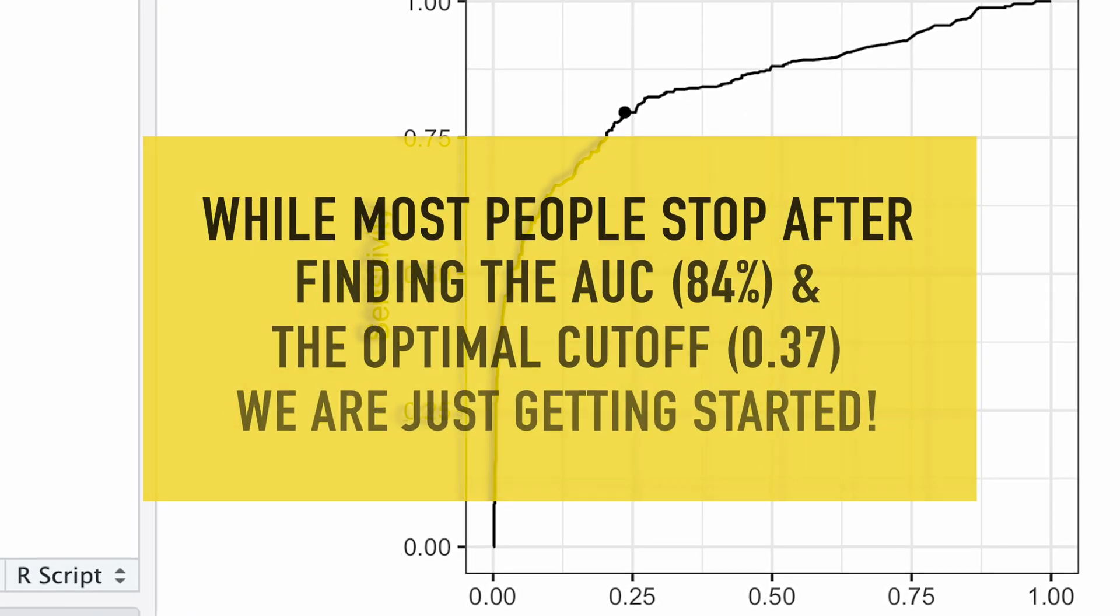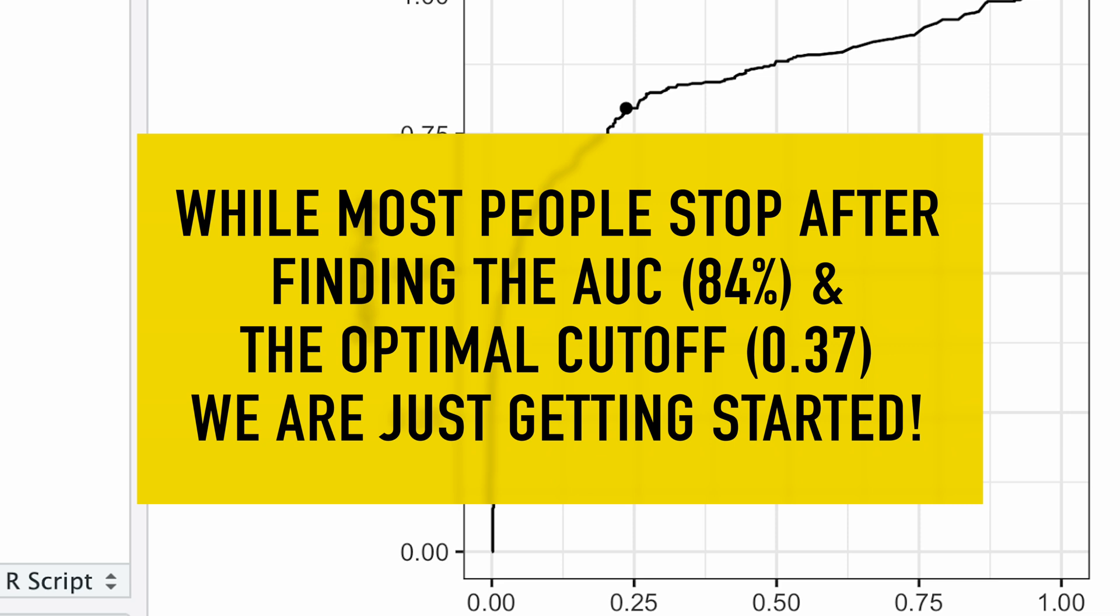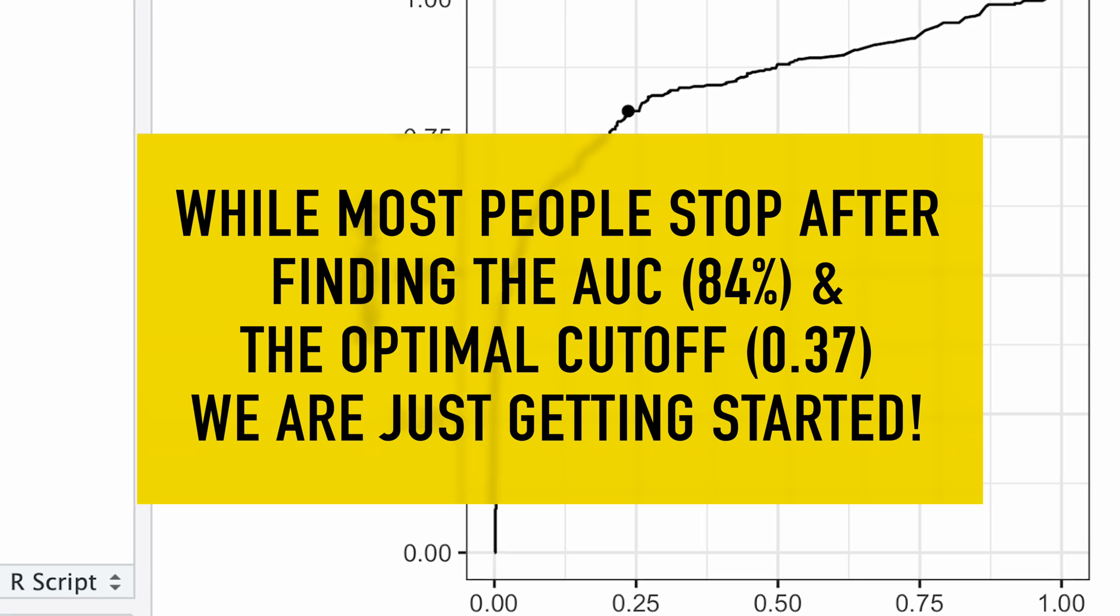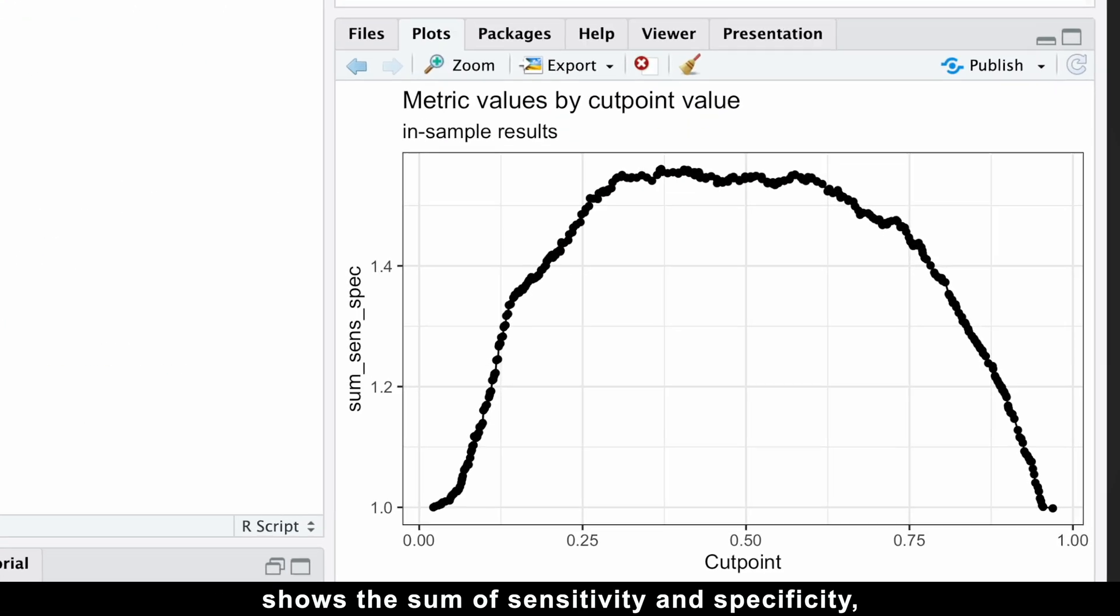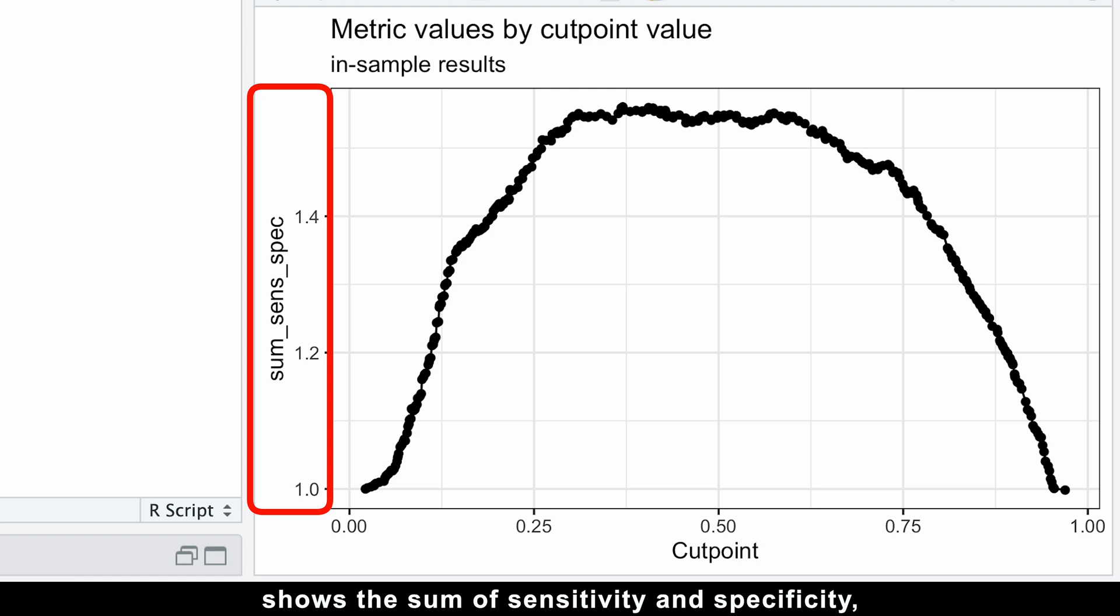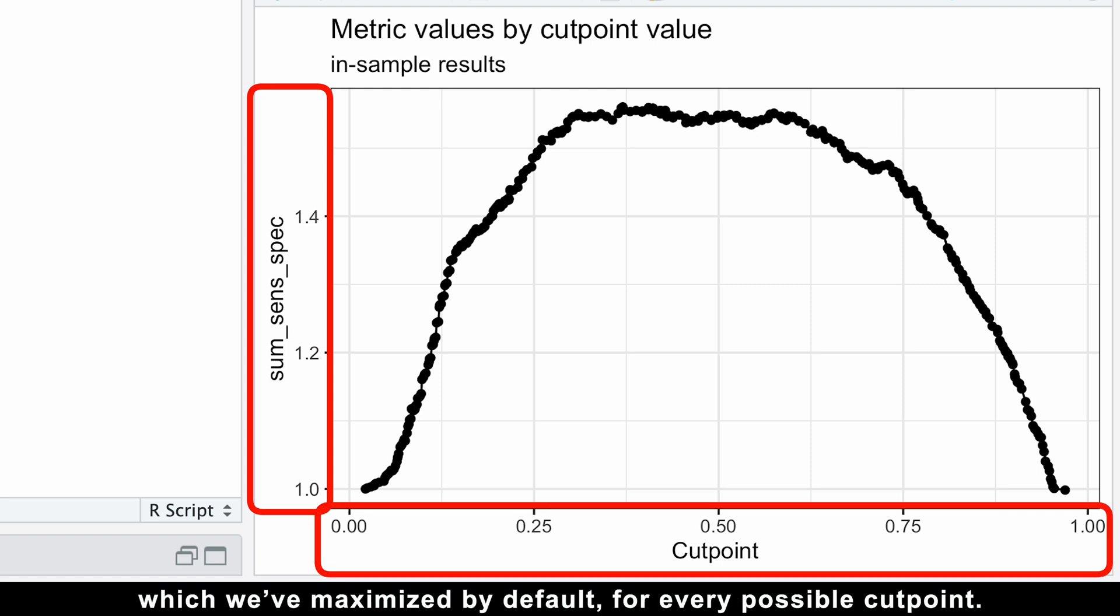Now, while most people stop after finding the AUC and the optimal cutoff, we are just getting started. There is much more valuable information we can uncover. For example, the plot metric function shows the sum of sensitivity and specificity, which we have maximized by default, for every possible cutpoint.